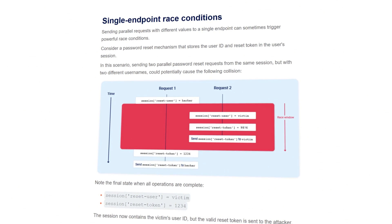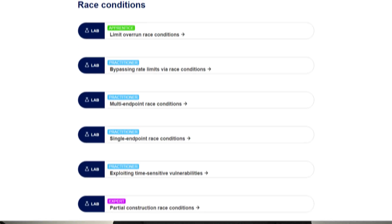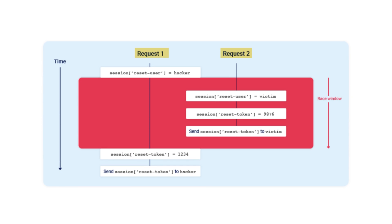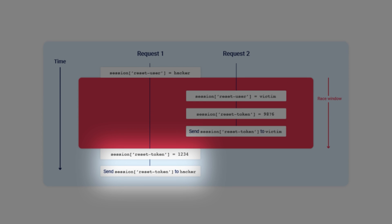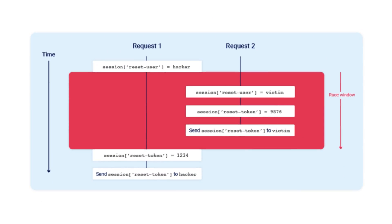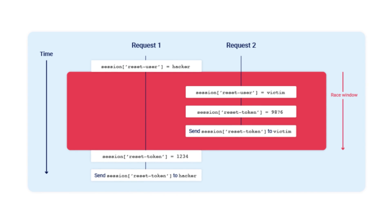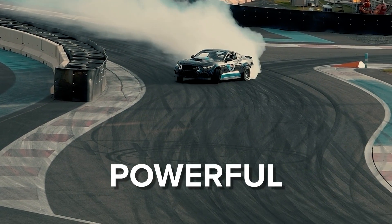There is a great example on the PortSwigger Web Security Academy site, and I also recommend working through the rest of the labs there after this video. Essentially what's happening is that we are sending two requests using the same session but with different values. One request comes in and the username is set to 'hacker,' then as the second request comes in the username is set to 'victim.' The reset token is created and sent to the victim, and the reset token for the first request is then set and sent to the attacker. We end up with the username being 'victim' and the reset token sent to the attacker as '1234.' Getting a collision like this to work will require multiple attempts, but it highlights the potential for how powerful race conditions can be.